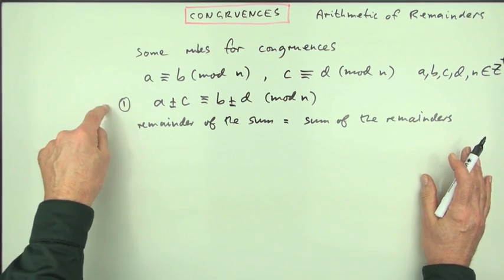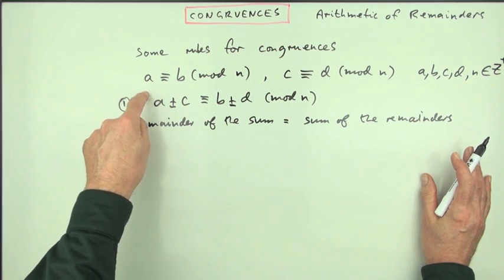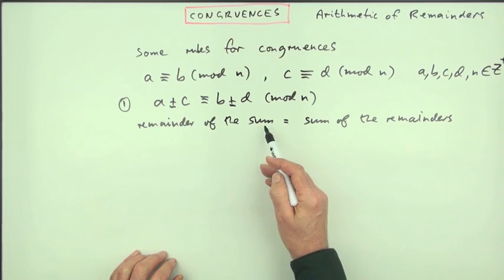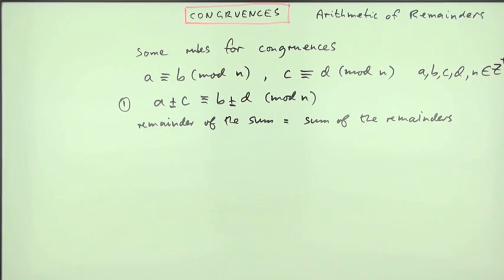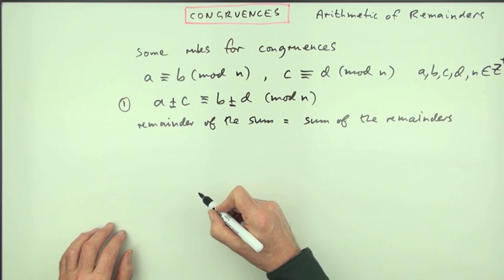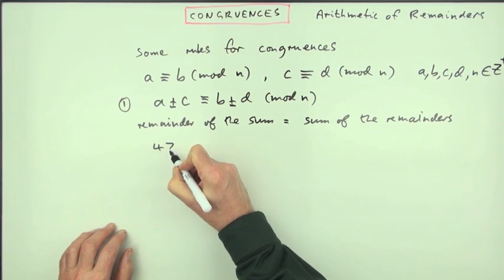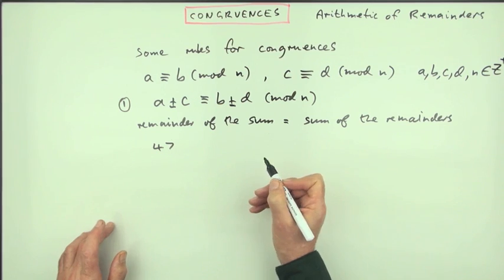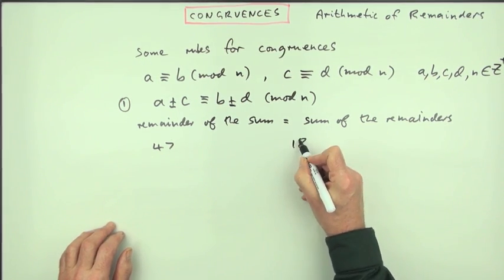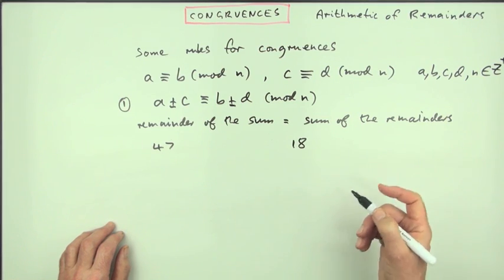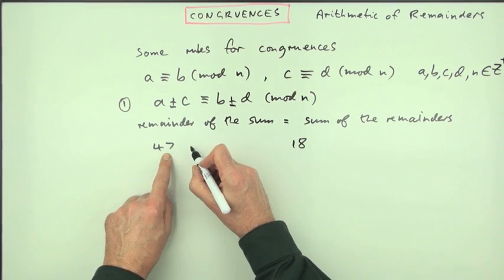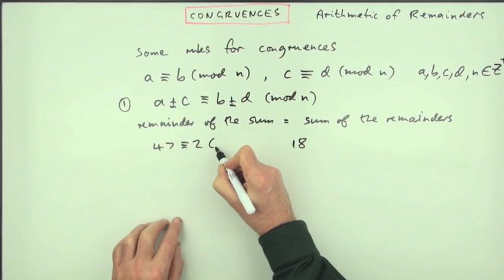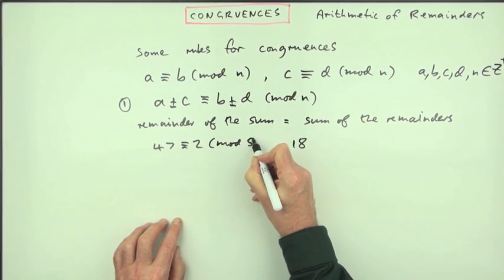As an illustration of the first one, the addition and subtraction principle, that is the remainder of the sum or difference equals the sum or difference of the remainders. We'll pick a couple of numbers. We'll take 47 and we'll take 18. And we'll take them both division with respect to 5, so that'll be mod 5. Well, 5 into 47 would go remainder 2, so that's congruent to 2 mod 5.